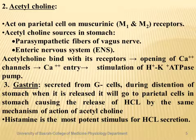The third transmitter is gastrin. Gastrin hormone is secreted from G cells during distension of the stomach when it is filled with food. When released, gastrin acts on specific receptors on the parietal cell through the same mechanism as acetylcholine — opening calcium channels, calcium entry, stimulation of the hydrogen-potassium ATPase pump — leading to increased synthesis and release of hydrochloric acid.